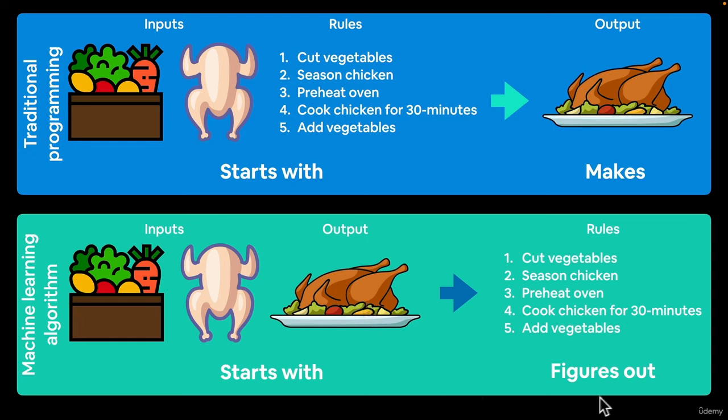If we wanted to write a machine learning algorithm to figure out our Sicilian grandmother's famous roast chicken dish, we would probably gather a bunch of inputs of ingredients such as these delicious vegetables and chicken, and then have a whole bunch of outputs of the finished product and see if our algorithm can figure out what we should do to go from these inputs to output.